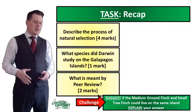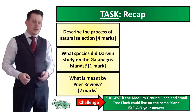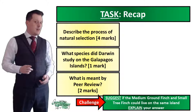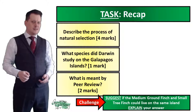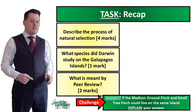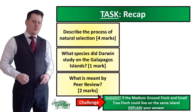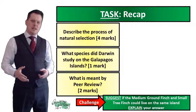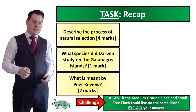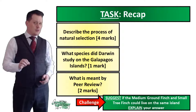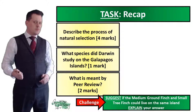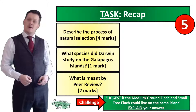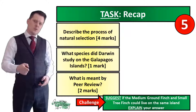Before we move on, I want a quick recap. Describe the process of natural selection for four marks — we covered this in our last lesson. What species did Darwin study on the Galapagos Islands? What is meant by peer review for two marks? And for a challenge, suggest whether the medium ground finch and the small tree finch could live on the same island and explain your answer, looking back at the food sources each bird eats. Pause if you need more time.